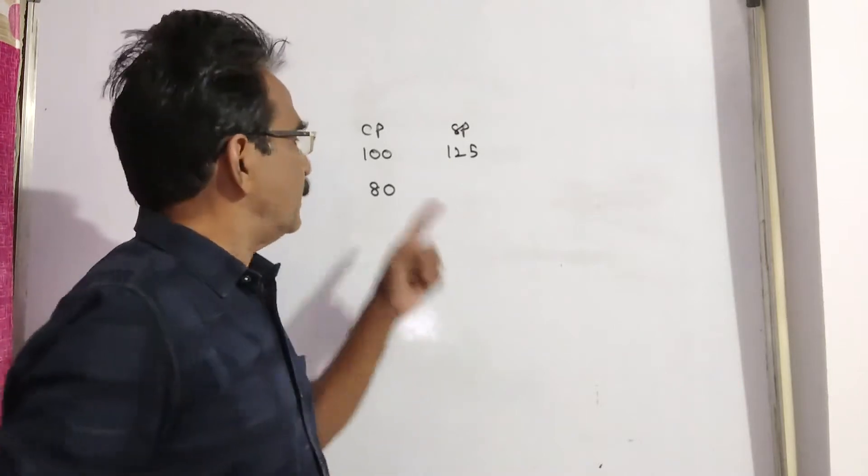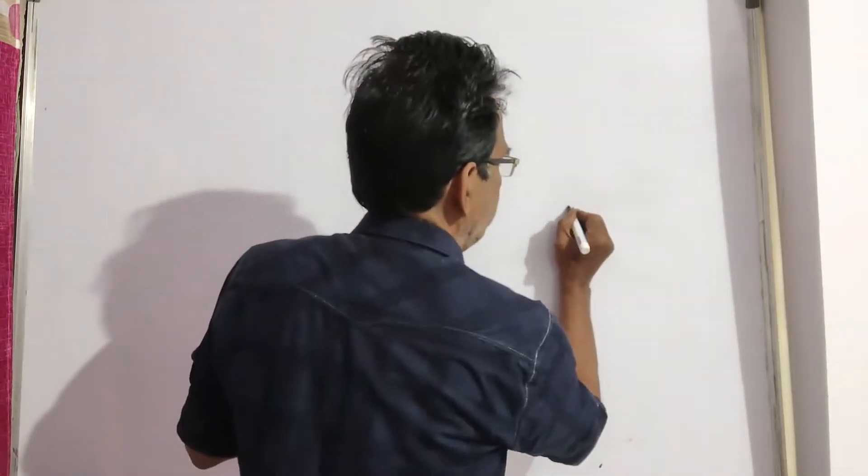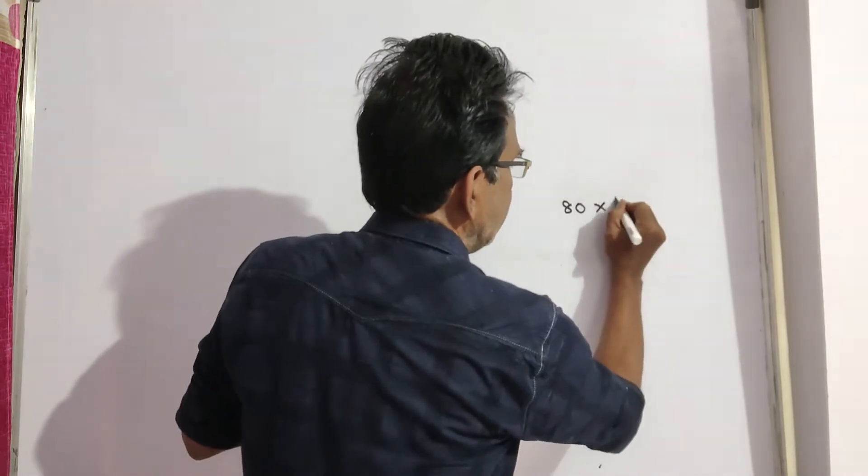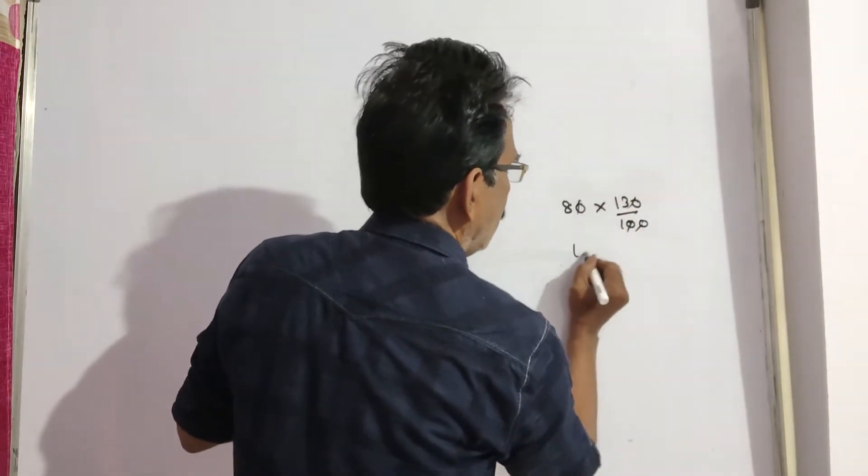Friends, 30% profit on Rs. 80 means the sold price will be 80 into 130 by 100, that is 104 rupees.